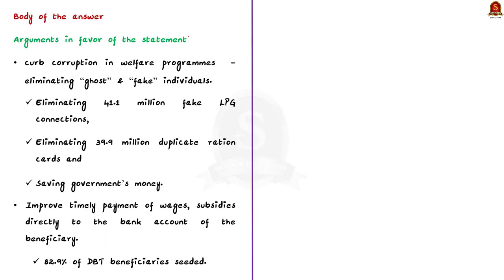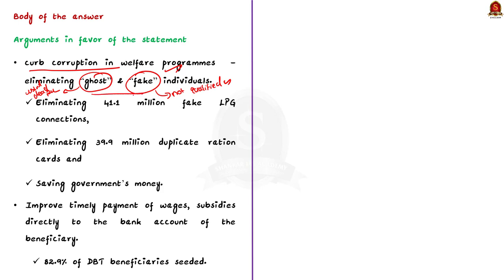Now let us move on to the body of the answer. In the first part of the body, highlight the advantages of using Aadhaar in public service delivery. The first advantage is the identification of beneficiaries of government welfare schemes. Aadhaar helped to curb corruption in welfare programs by eliminating ghost and fake individuals. A ghost individual accesses rations in the name of a dead person, while a fake individual accesses rations without entitlement. According to a report by the parliamentary committee, Aadhaar-enabled direct benefit transfer helped eliminate 41.1 million fake LPG connections and 39.9 million duplicate ration cards.